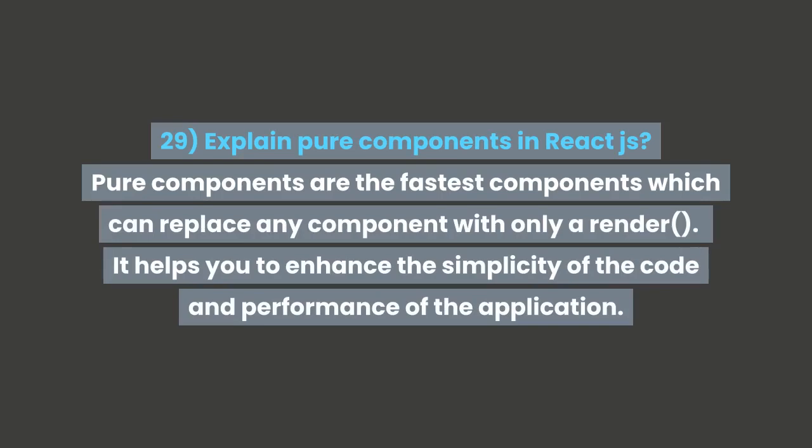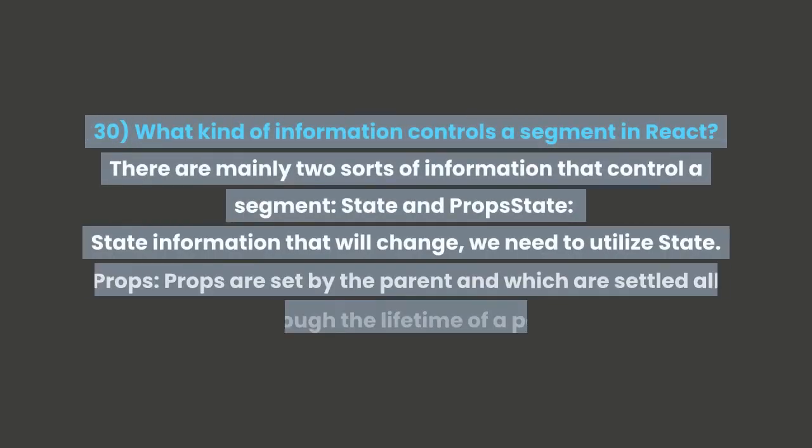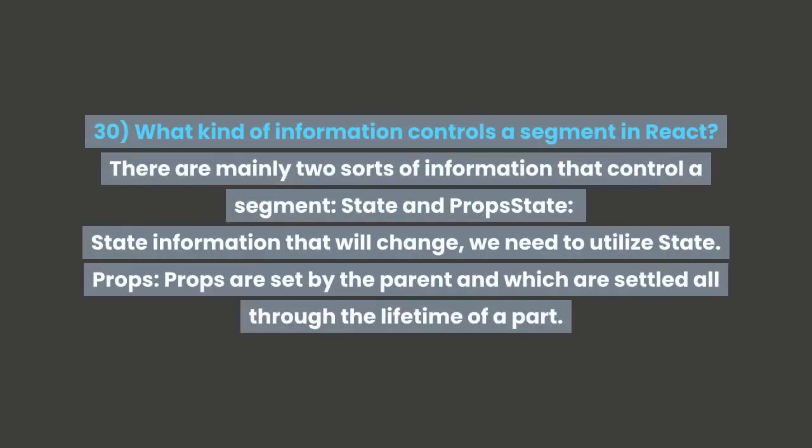Question 29: Explain pure components in React.js. Pure components are the fastest components which can replace any component with only a render. They help to enhance the simplicity of the code and the performance of the application. Question 30: What kinds of information control a component in React? There are mainly two types: state and props.